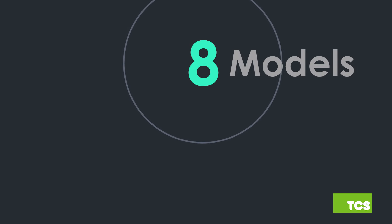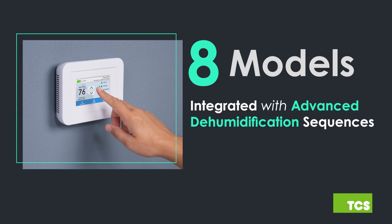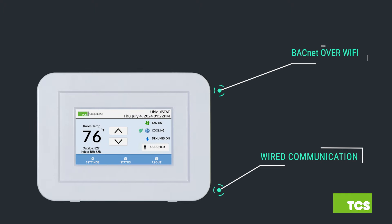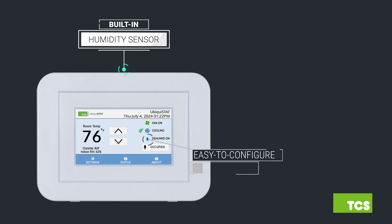Humidity control is built into eight Ubiquistat models, integrating advanced dehumidification sequences into our powerful room controller. Each Ubiquistat model, whether it uses wired communications or Wi-Fi, has a version equipped with a built-in humidity sensor and easy to configure dehumidification sequences.